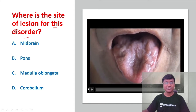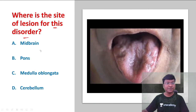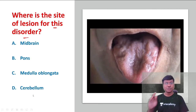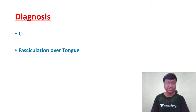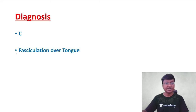You should be able to make out what exactly is that particular disorder which you see over the tongue. Looking at the options — midbrain, pons, medulla oblongata, and cerebellum — first of all, what is the diagnosis? The diagnosis of this particular disorder is fasciculations.